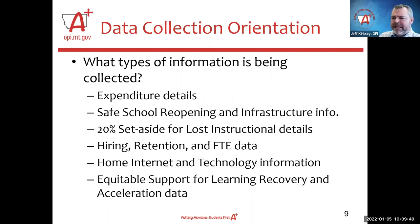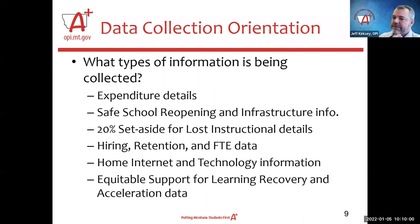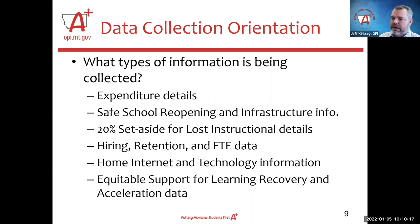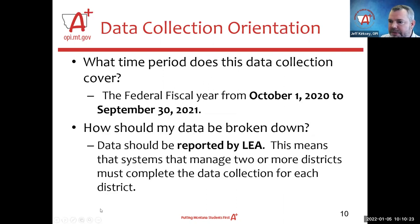What type of information is being collected? There are actually six different categories. We'll go over expenditure details today, and in subsequent webinars we will be addressing safe school reopening and infrastructure info, the 20% set aside for lost instructional time details, hiring, retention, and full-time equivalency data, home internet and technology information, and equitable support for learning recovery and acceleration information.